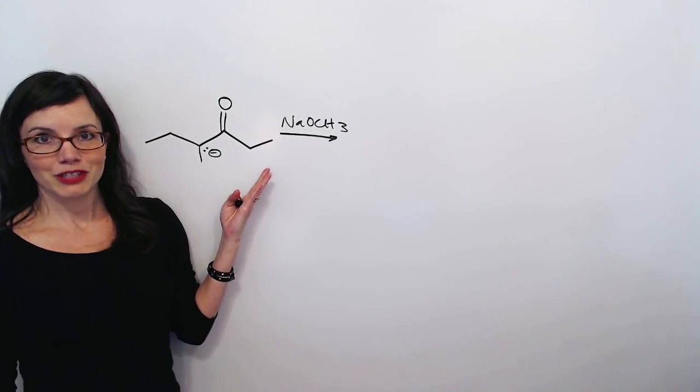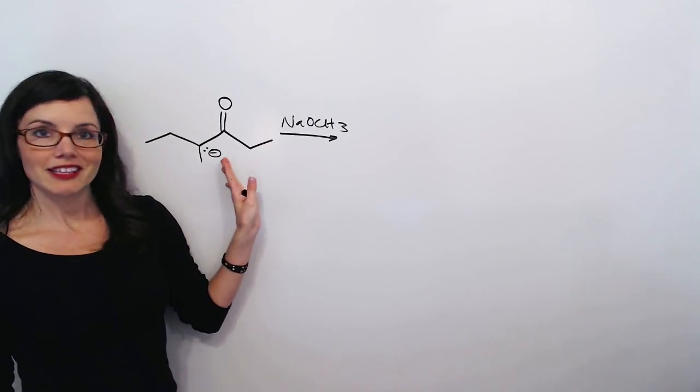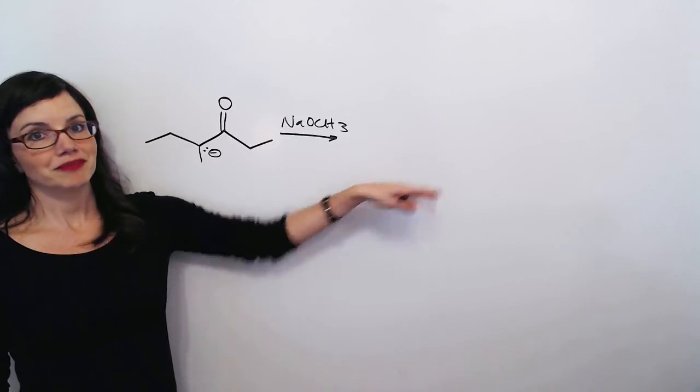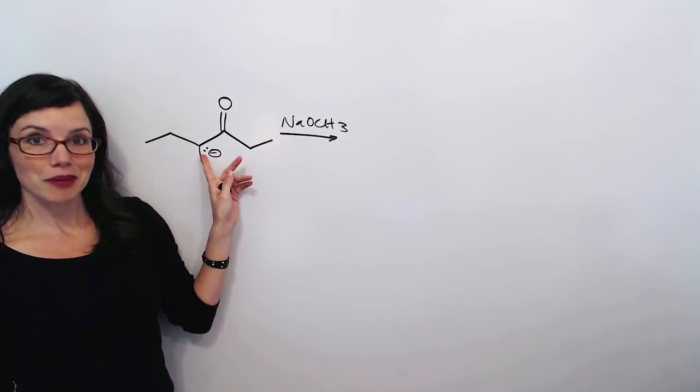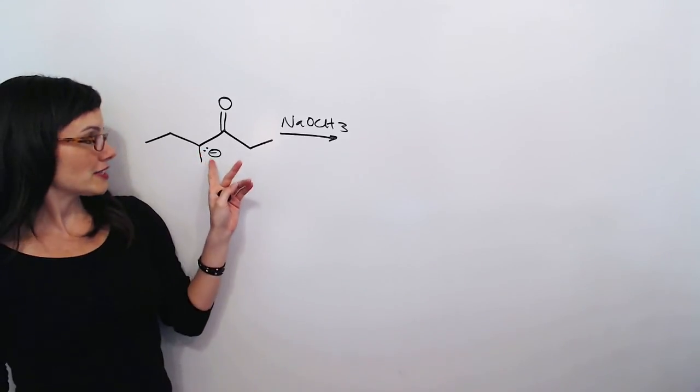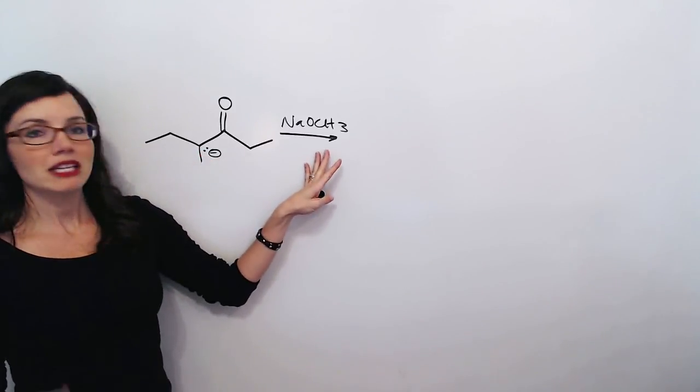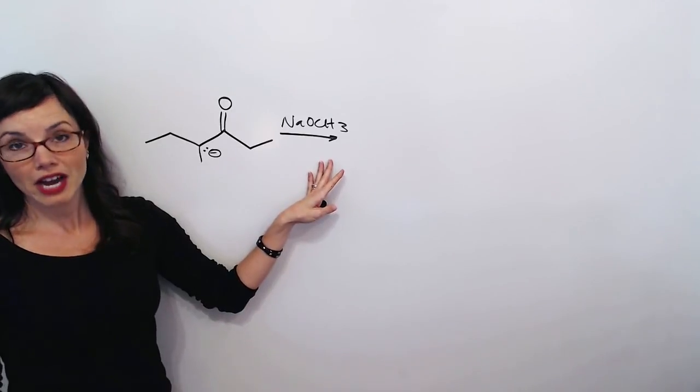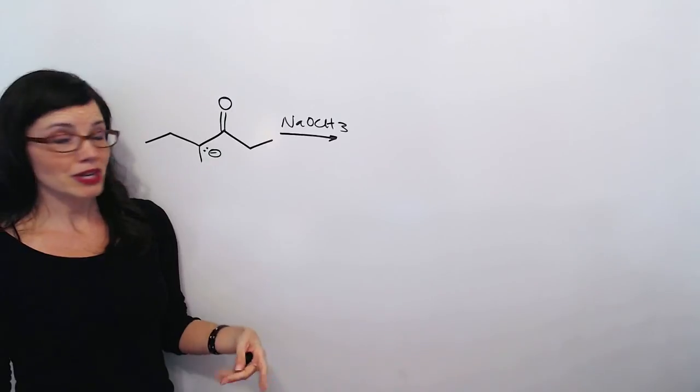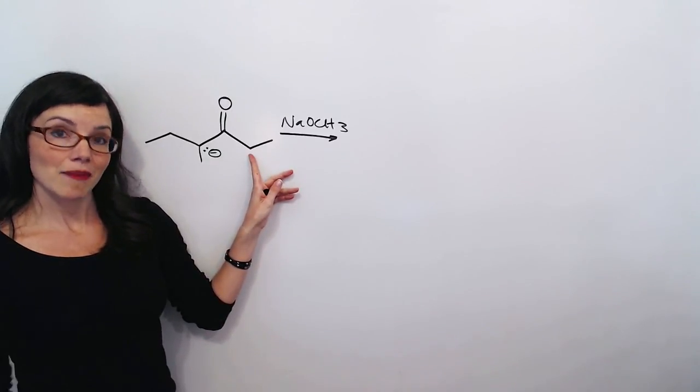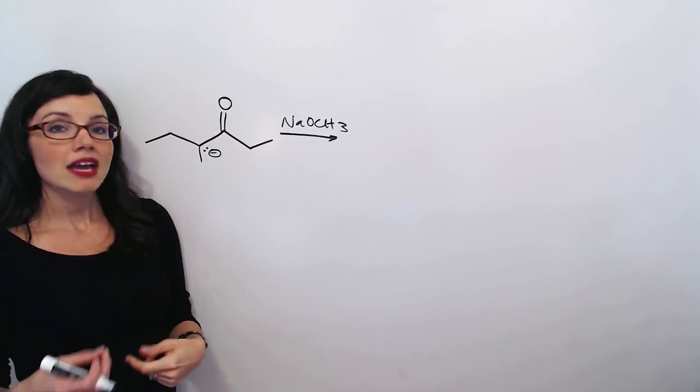This is the enolate that you want to draw. You could have drawn it just like this or you could have redrawn it over here. And all you had to do was put an electron pair and a negative charge on this carbon. And again, we chose this carbon because we have a medium strong alkoxide or hydroxide base. If we had a stronger base like LDA that's bulky, we would have chosen the less hindered alpha carbon.